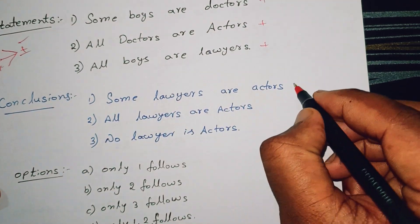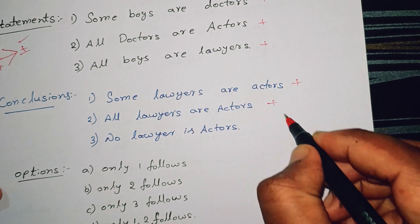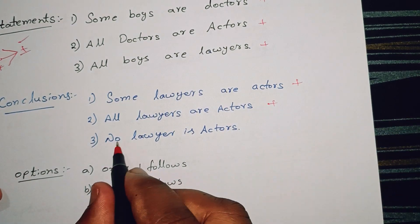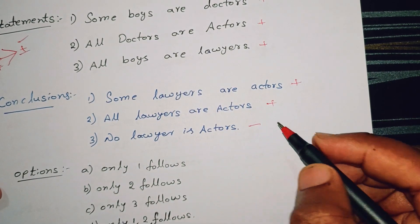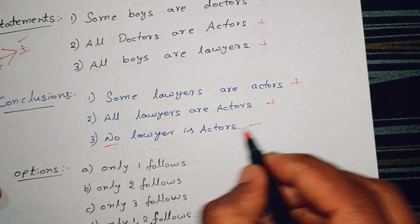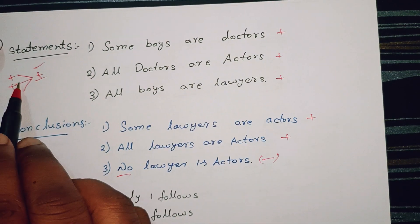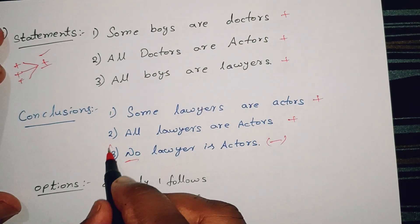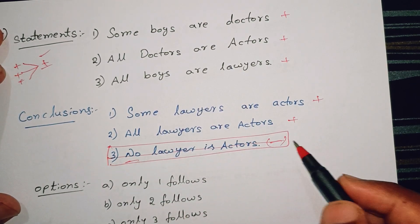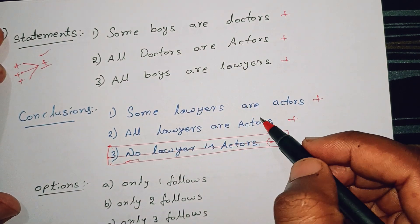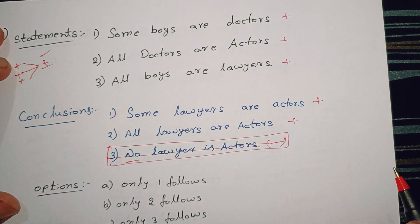'Some lawyers are actors' — this is a positive conclusion. 'All lawyers are actors' — this is a positive conclusion. 'No lawyer is actor' — this is a negative conclusion. So if you have three positive statements, the positive conclusion is correct. Negative conclusion is incorrect. So I will cancel the negative conclusion. The two positive conclusions are correct. We will check the conclusion.